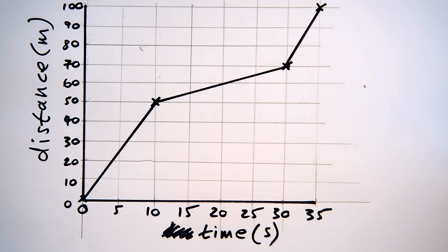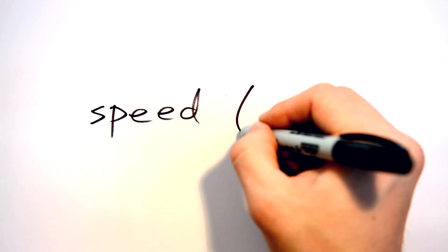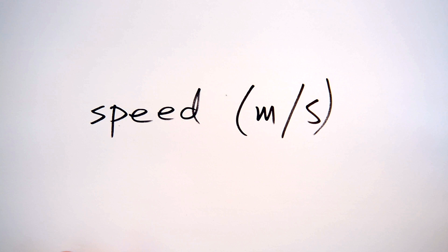Now let's have a look at our graph and let's try to calculate Bob's speed at different points. Now speed is measured in meters per second, m/s, that's how we write it, which should give you a clue as to how we actually calculate it.